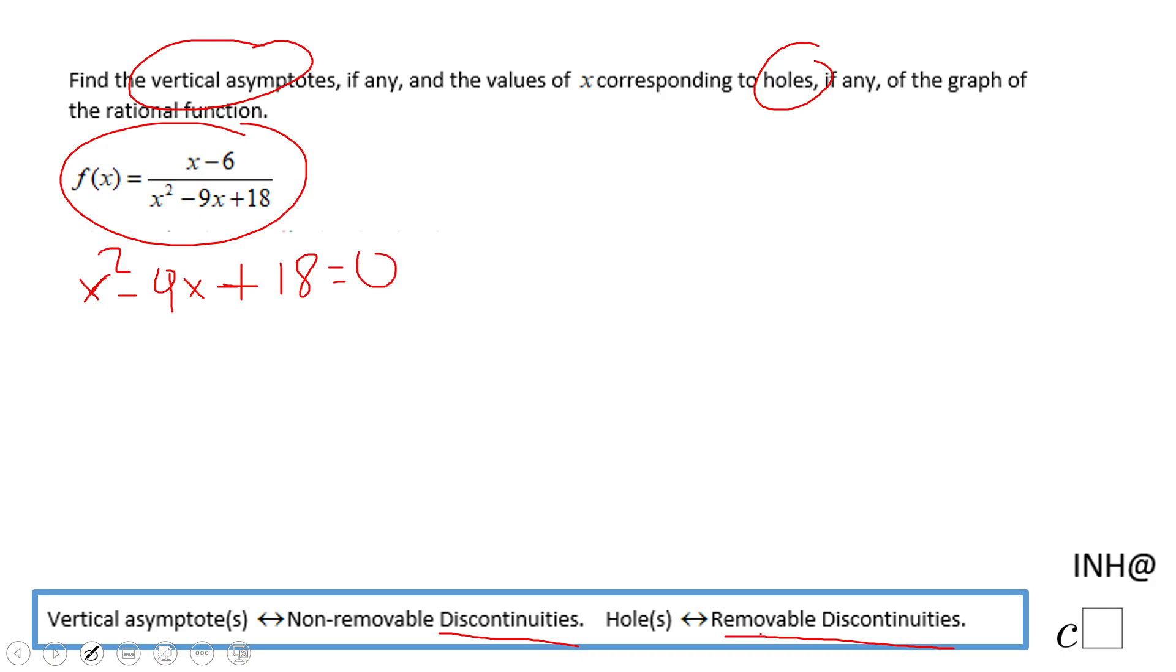Okay, so now we're going to solve this quadratic equation. I think it works fine by factoring, so we're going to have here x minus 6, x minus 3, equals zero.